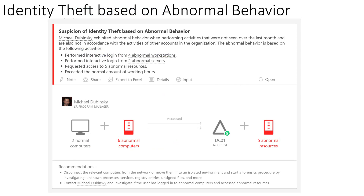Another favorite detection is identity theft based on abnormal behavior. Here we have a user trying to perform interactive logins from different workstations and servers, requesting access to resources he doesn't normally access, and doing all of this outside normal working hours. Machine learning is used to build a profile on this user to understand what's normal and not normal for that individual. This behavior is obviously not normal, so it triggers an alert prompting you to take action.